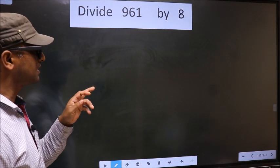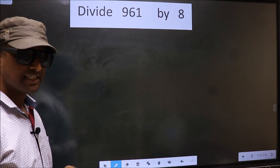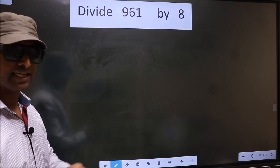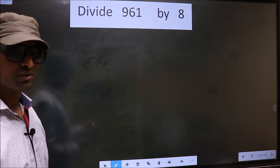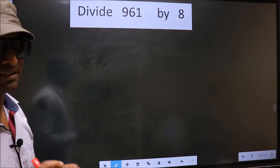Divide 961 by 8. While doing this division, many do this mistake. What is the mistake that they do? I will let you know. But before that, we should frame it in this way.